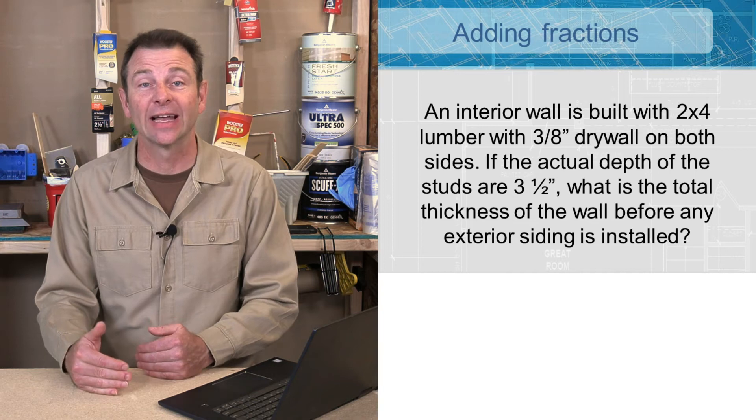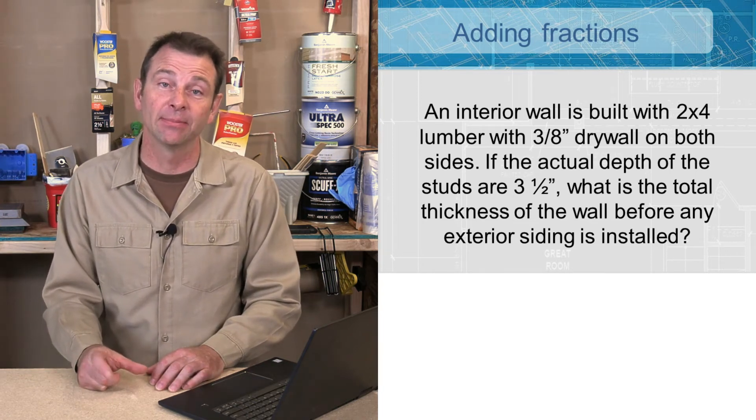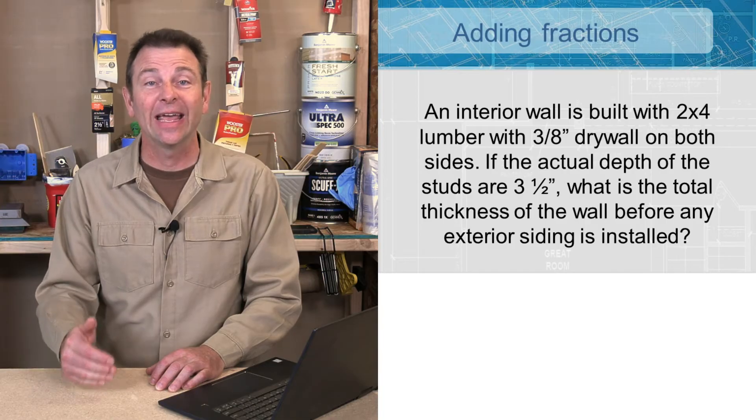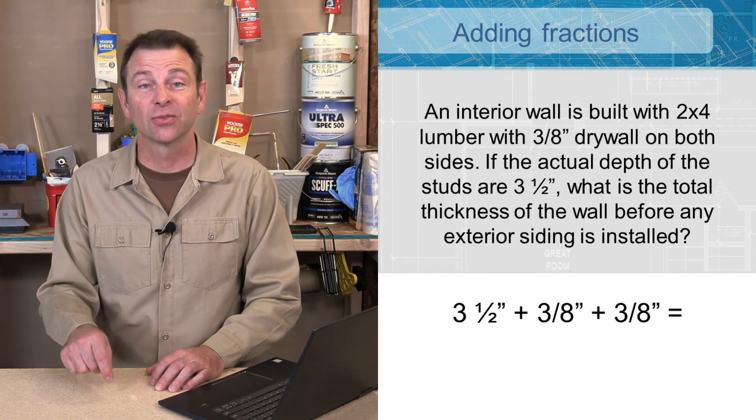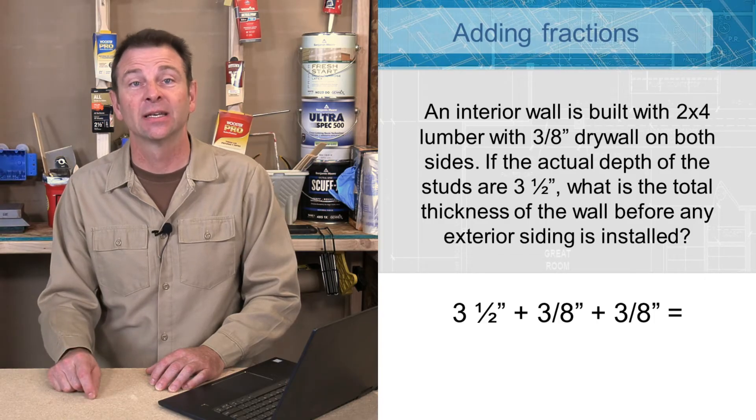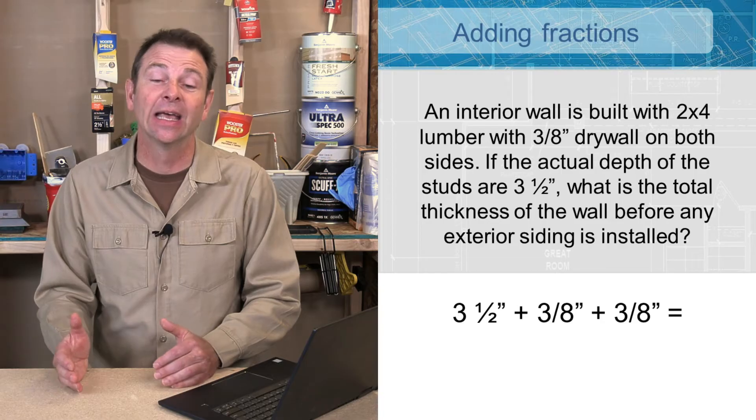We know that a 2x4 is 3½ inches deep, and we're going to add 3/8 onto each side of that. So now we have 3½ plus 3/8 plus 3/8. So we need to make all of our denominators match again. Our 3/8 and our 3/8 share a denominator of 8, so we can convert our 3½ to have an 8 on the bottom.